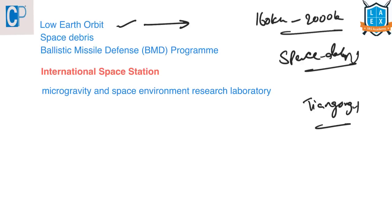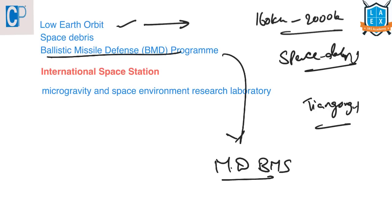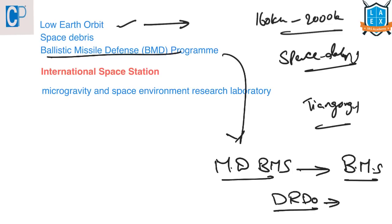Why is space debris a threat? Because inactive satellites might collide with active satellites and make them dysfunctional. What is the ballistic missile defense program of India? It is an initiative for developing and deploying a multi-dimensional ballistic missile defense system to protect the country from ballistic missile strikes. This is being developed by the Defense Research and Development Organization to provide a multi-layered shield against ballistic missile attacks. India's ballistic missile defense development began in 1999 after the Kargil War, to strengthen India's defense against possible nuclear attack from Pakistan.